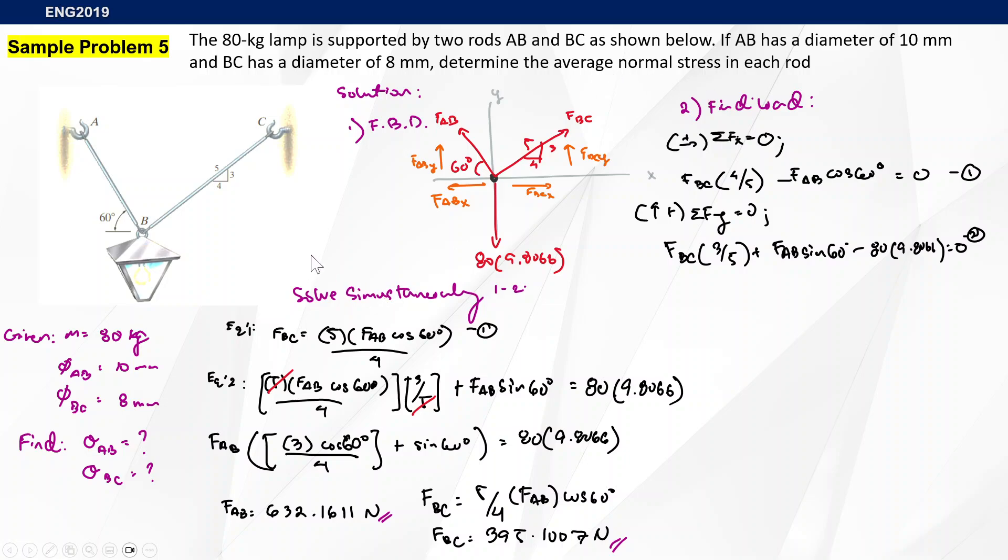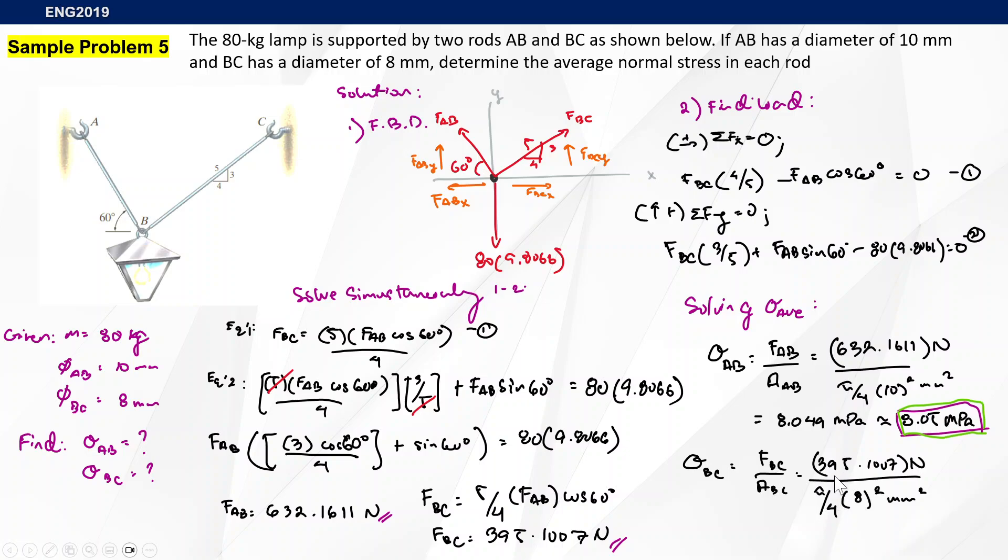Now that we know FAB and FBC, we can determine their respective average normal stress. Let's start with sigma AB. We substitute FAB here divided by the area pi over 4 times 10 millimeters squared. Newton over millimeter squared will give you 8.05 megapascals. Finally, for sigma BC, that's 395.101 newtons divided by the area of BC, pi over 4 times 8 squared millimeters squared, which gives 7.86 megapascals. It's a lot easier if you're doing it step by step. The trick here is not to be wrong with your algebraic equations. It's just really algebra and setting up your equation statement.